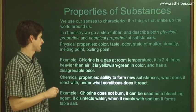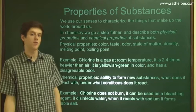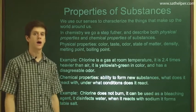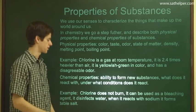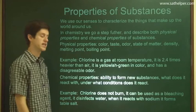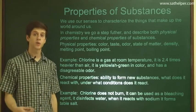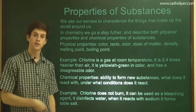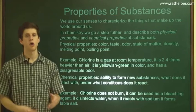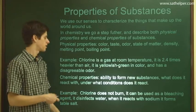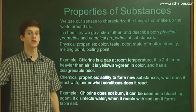Chemical properties are more about a substance's ability to form new substances — what does it react with, under what conditions, is it very reactive or not? For example, chlorine's chemical properties include: it doesn't burn, it can be used as a bleaching agent — it can react with the dyes in your clothes and turn them white — and it also disinfects water. Importantly, you can't discover chemical properties by just looking at plain old chlorine in a bottle; you have to take it out into the world and see how it reacts.